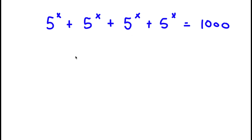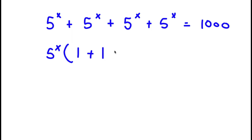The first thing I'm going to do is factor out 5 to the power of x from my left-hand side. So now I'm going to have 5 to the power of x times — 5 to the power of x divided by 5 to the power of x is 1 — so I have 1 plus 1 plus 1 plus 1, and this is equal to 1,000.